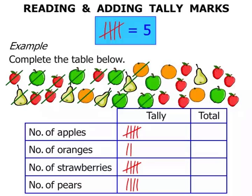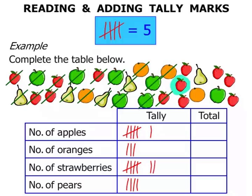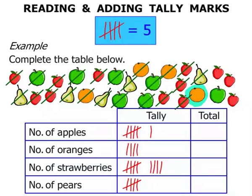Now we've got another apple, so we start a new group of five there. An orange. I think we've got a few strawberries coming — there's one, another one, another one, and another one. A pear, and that's our fifth pear, so the line goes across. Another orange — we're up to four oranges now. Another strawberry, and another line across, so we've got two groups of five in the strawberries so far.